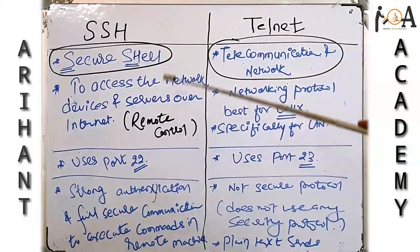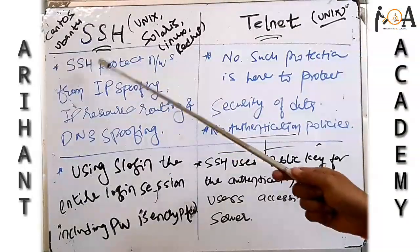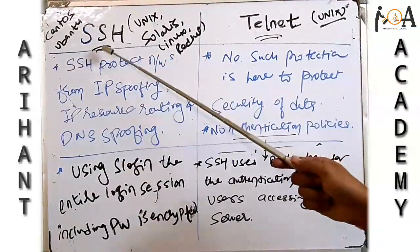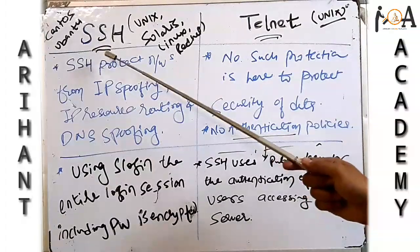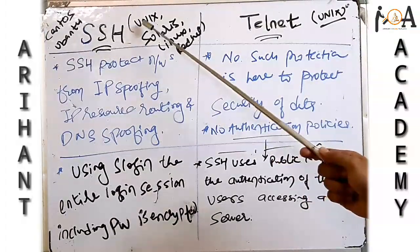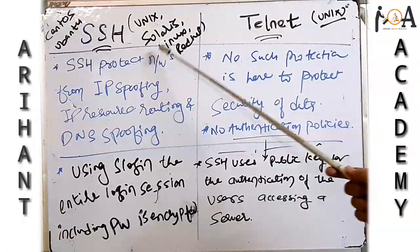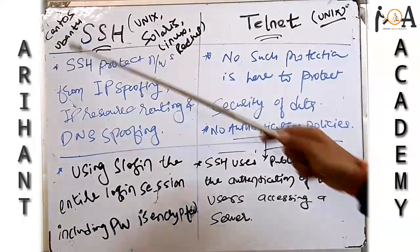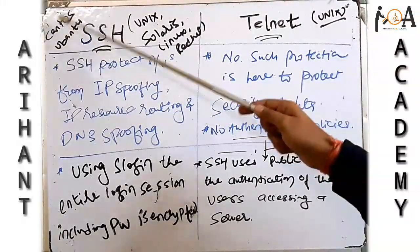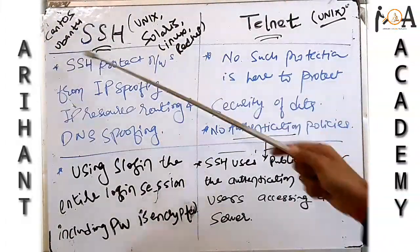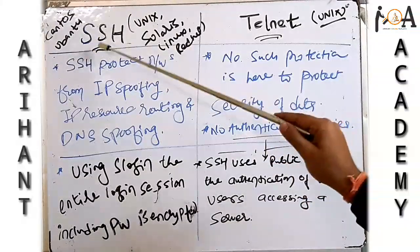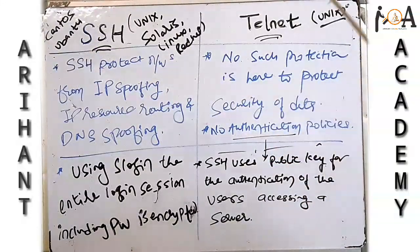Now let's see some more differences between SSH and Telnet. SSH is operable on Unix, Solaris, Linux, Red Hat, CentOS, and Ubuntu operating systems. This range of operating systems is suitable for SSH, whereas Telnet is mostly suitable for the Unix environment.